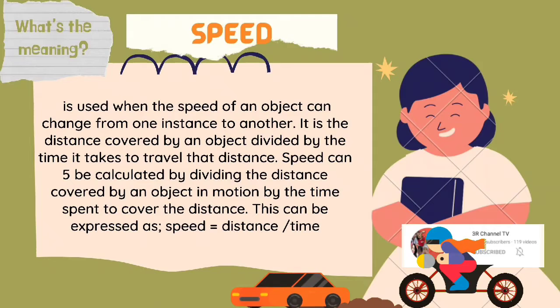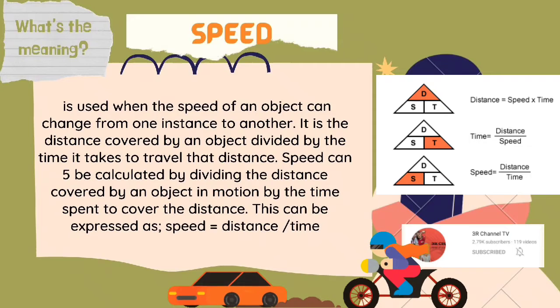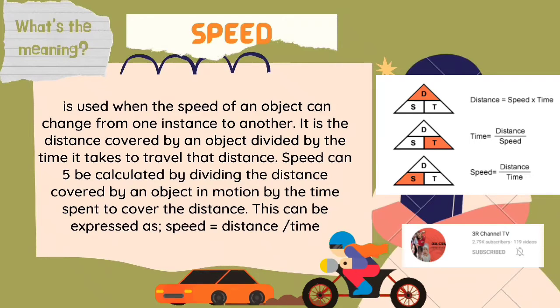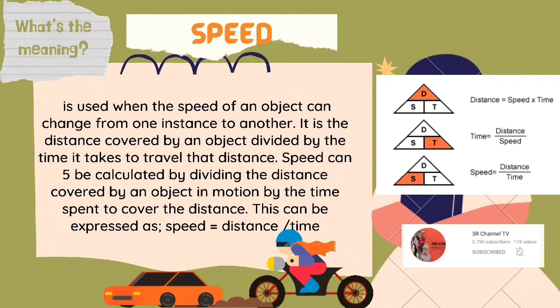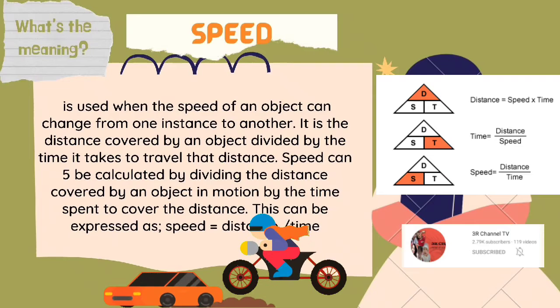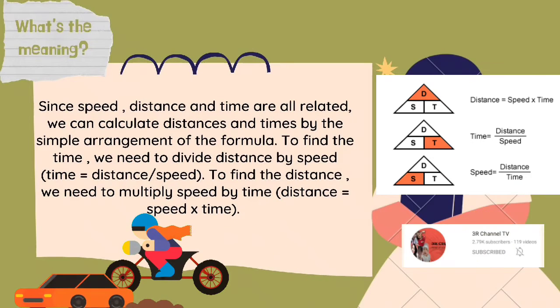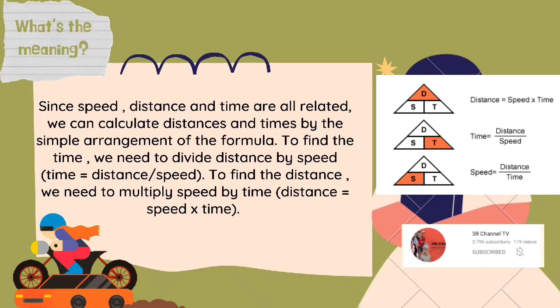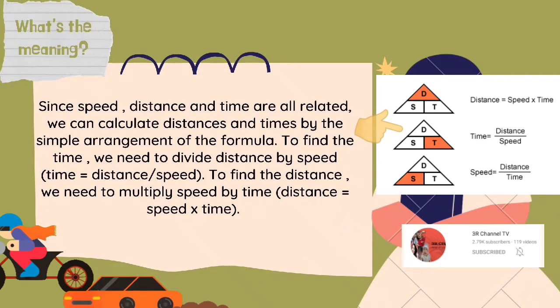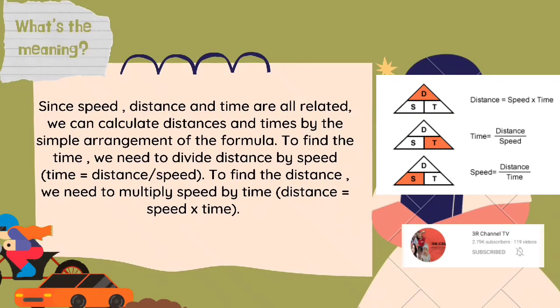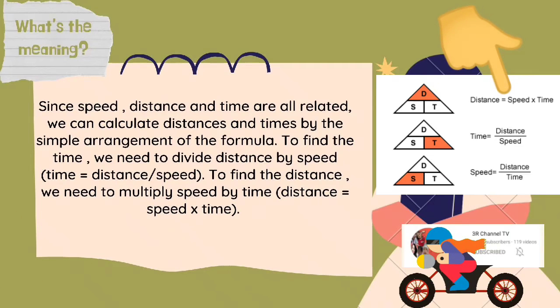What's the meaning of speed? It is used when the speed of an object can change from one instance to another. It is the distance covered by an object divided by the time it takes to travel that distance. Speed can be calculated by dividing the distance covered by an object in motion by the time spent to cover the distance. This can be expressed as speed is equal to distance divided by time. Since speed, distance, and time are all related we can calculate distance and times by the simple arrangement of the formula. To find time, we need to divide distance by speed or time is equal to distance divided by speed. To find the distance, we need to multiply speed by time or distance is equal to speed multiplied by time.